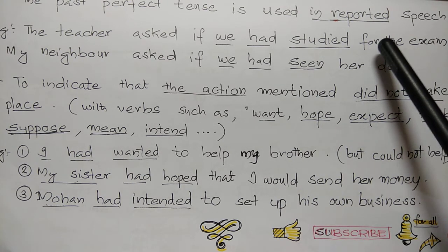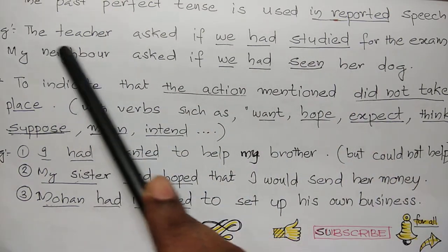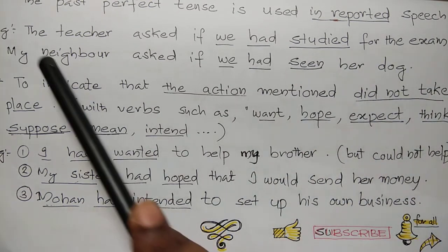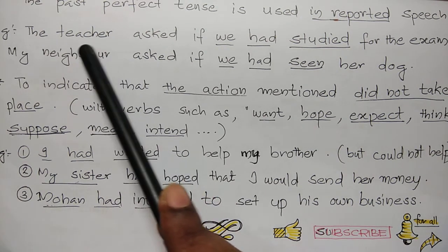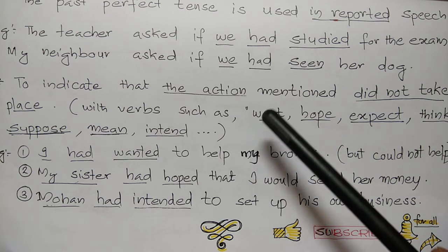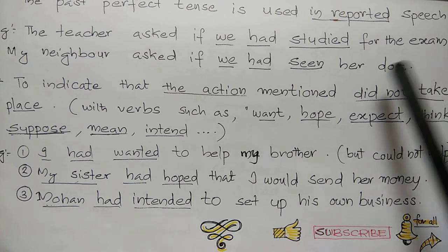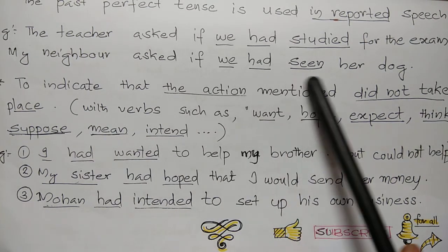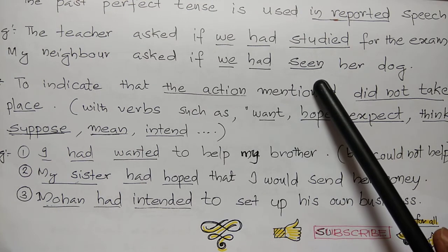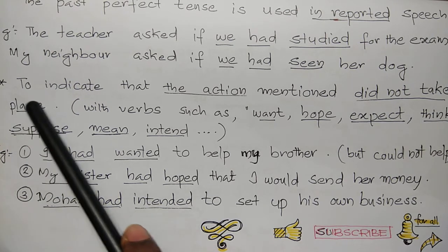The past perfect tense is also used in reported speech — that is, indirect speech. For example: 'The teacher asked if we had studied for the exam.' The direct speech would be: 'The teacher said, did you study for the exam?' When we convert to indirect speech, it becomes: 'The teacher asked if we had studied for the exam.' Another example: 'My neighbor asked if we had seen her dog' — this is also indirect or reported speech.